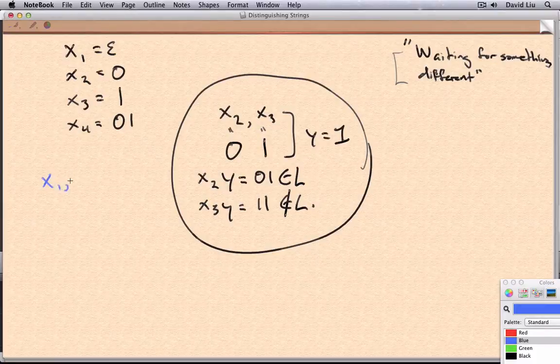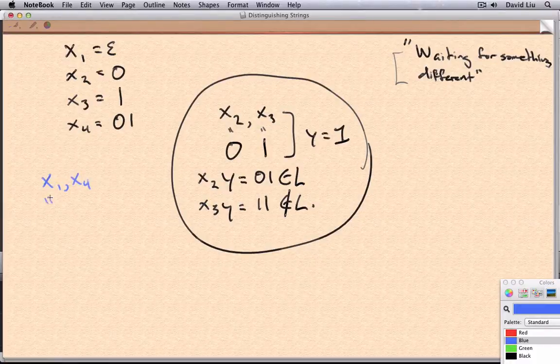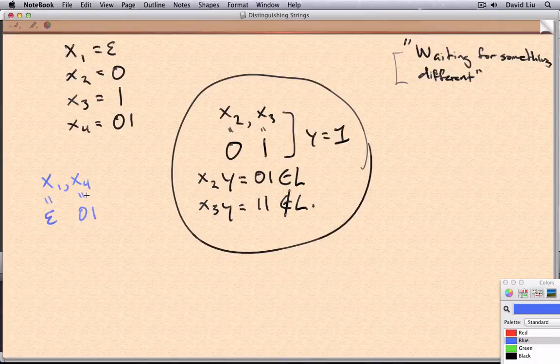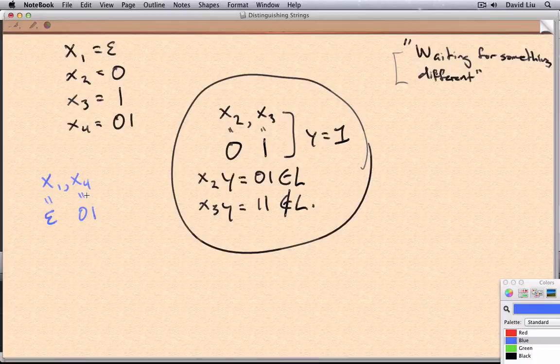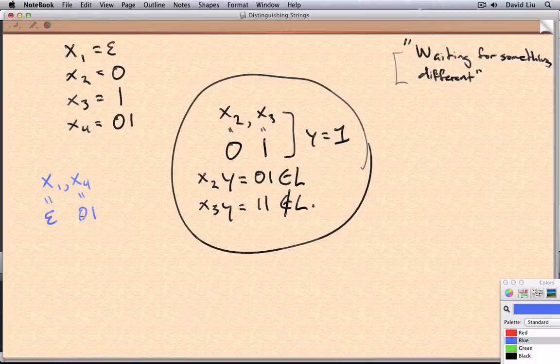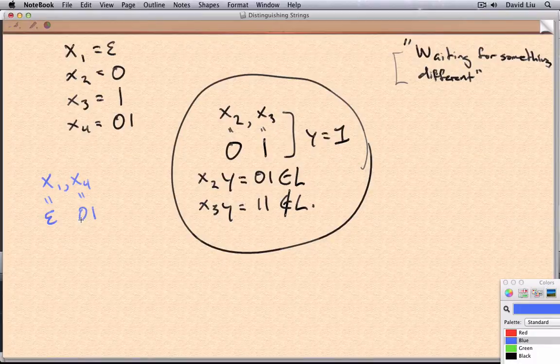Let's pick X1 and X4. So this is equal to the empty string, and this is equal to 01. Now, the reasoning here is a little bit different, because this 01, no matter what comes later, no matter what comes after X4, it's going to be in the language.